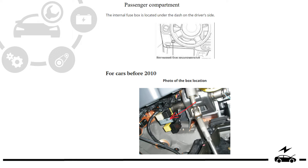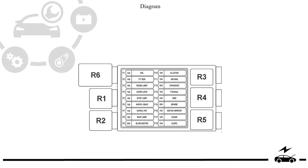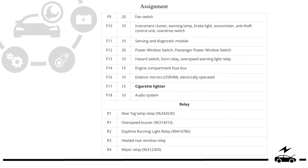Passenger compartment fuse box location. Type 1: photo, diagram, assignment.